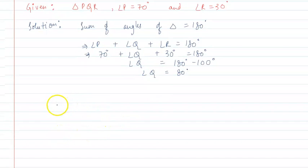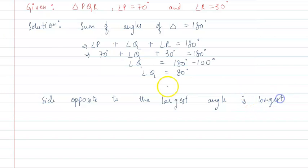The side opposite to the largest angle is the longest. Since angle Q is the largest angle at 80 degrees, the side opposite to it will be the longest side.